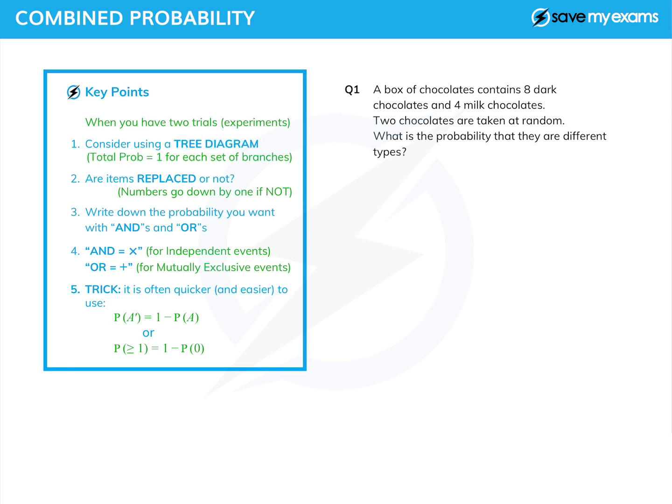You're going to need to make a decision. If two things are happening, and it involves picking things out of a bag or a hat or a chocolate box or something, you need to decide whether the items are replaced. And if they're not replaced, remember that the numbers, particularly on the bottom of the fractions, go down by one.